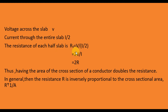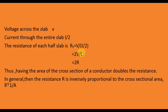From Ohm's law, the resistance of each half slab R1 = V / (I/2) = 2V/I = 2R. So halving the cross-sectional area of a conductor doubles its resistance.